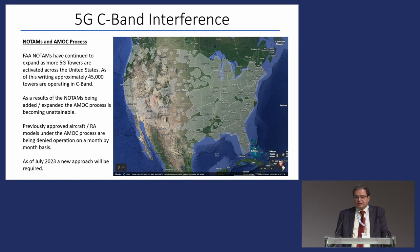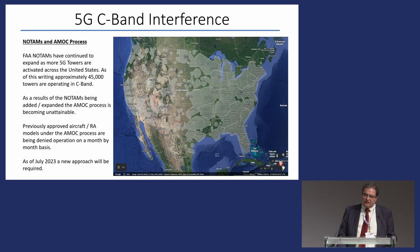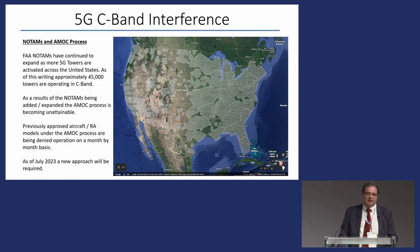Here's an example from about a month ago of what the US NOTAMs look like. It's practically a continuous NOTAM almost from Maine down to Florida and all the way into Texas, picking up again in California and Washington. It is expected that by next quarter 2023, this will be a solid continuous NOTAM across the country, which is completely unacceptable. The FAA has acknowledged they cannot continue with this AMOC process and is looking to switch to something called a signal-in-space approach.